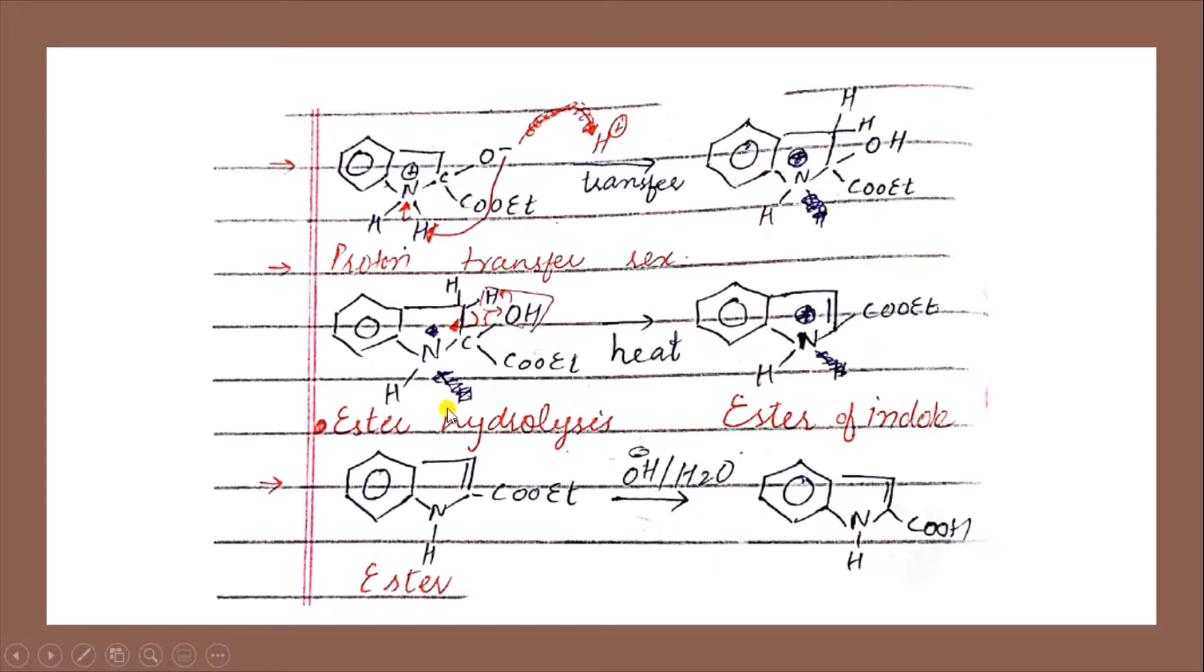In the next step, if we want to convert this COOEt group into COOH, we will do ester hydrolysis. The ester hydrolysis occurs in the presence of a base and water. As a result, the COOEt will convert into COOH.